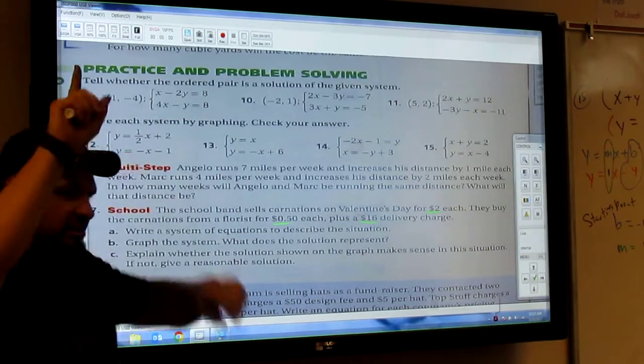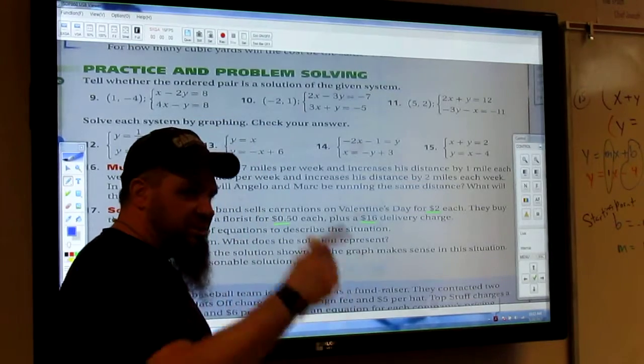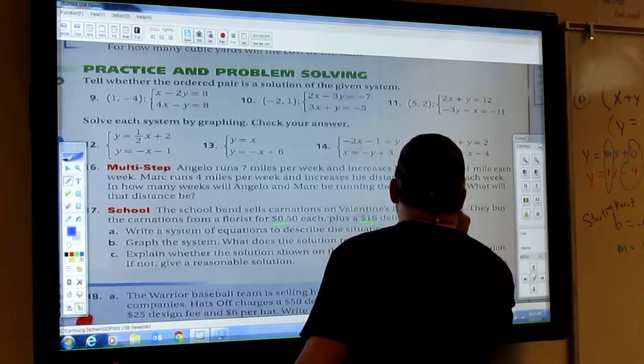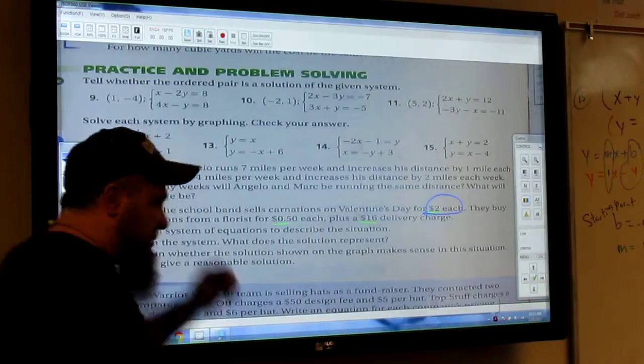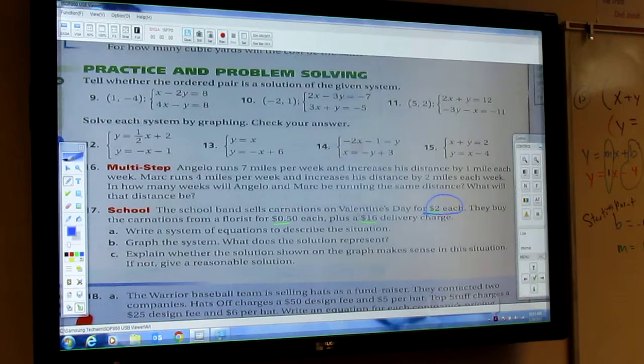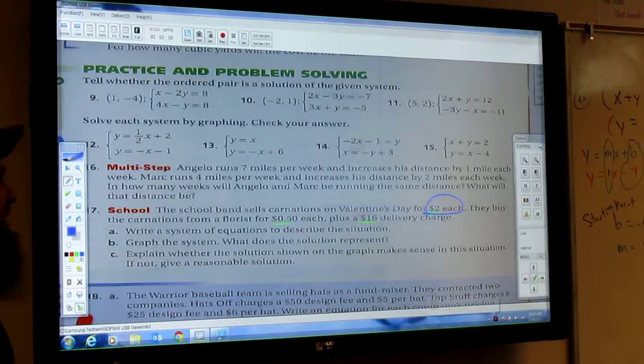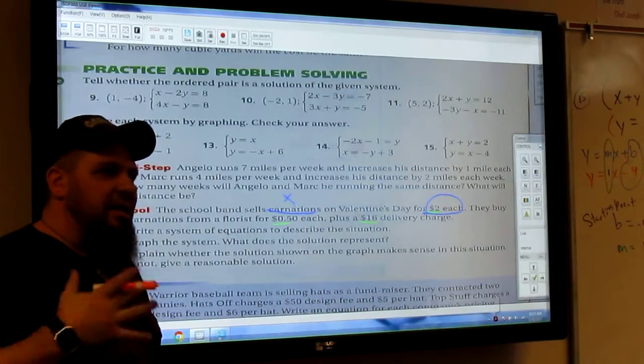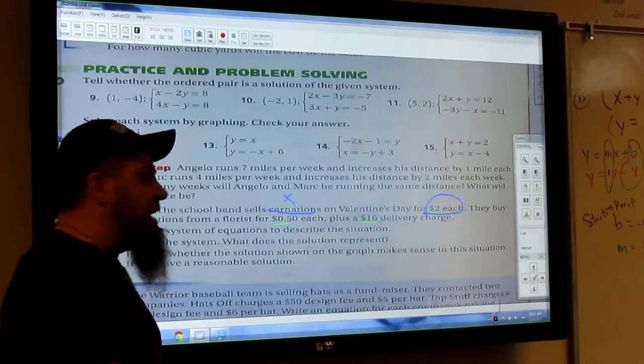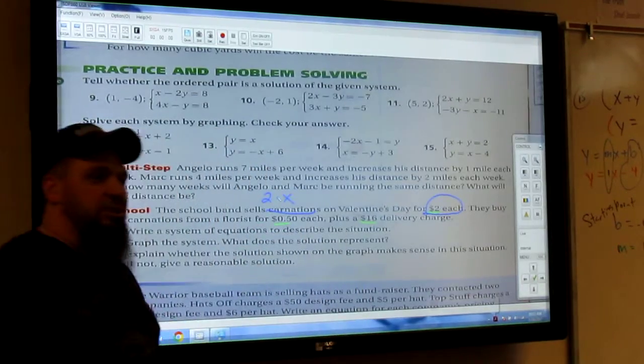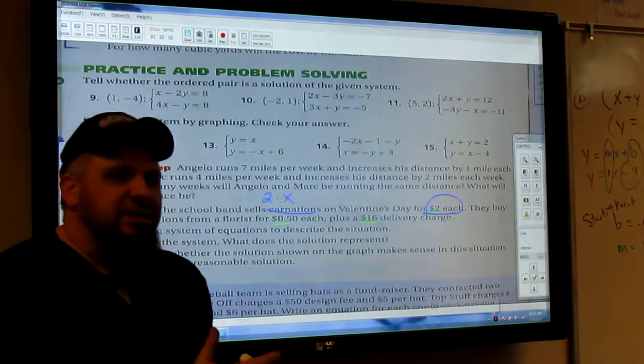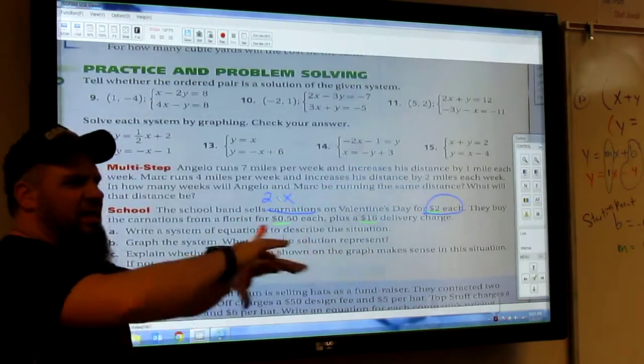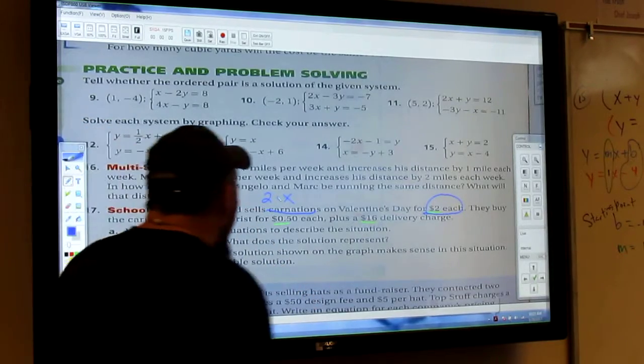It could be carnation milk, but I doubt it. It's probably flower. So they're selling flowers on Valentine's Day for two bucks. Focus. For two bucks each. We kind of need to know the whole each part. That means that if I'm given X carnations, then I'm going to get $2 per carnation. $2 every carnation. Does that make sense? I'm just outlining it. That's all I'm doing. Just outlining this problem.